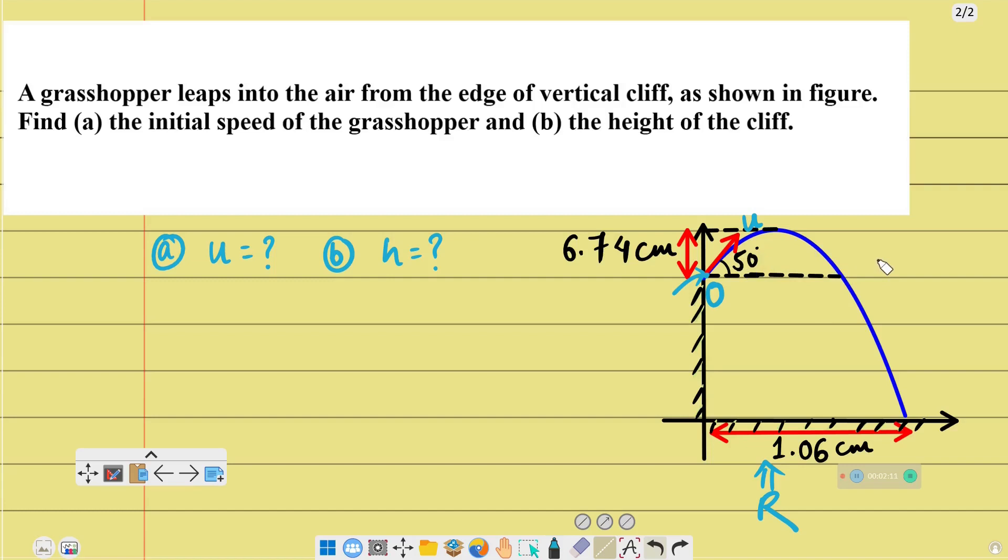We will use projectile motion principles. The projectile is launched at an angle to the horizontal. This point is the origin at the height of the cliff, and we have a maximum height. So we need to find the height of the cliff.